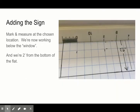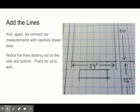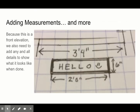Alright, now we're going to add our sign. Same process. We're going to mark and measure the chosen location below the window. We're working two feet from the bottom of the flat. And you can see that it's two feet six to the bottom of the window. Then we're down for our sign. The marks are going to the outsides for us to be able to add those labels and show all the details of what it looks like when it's done.